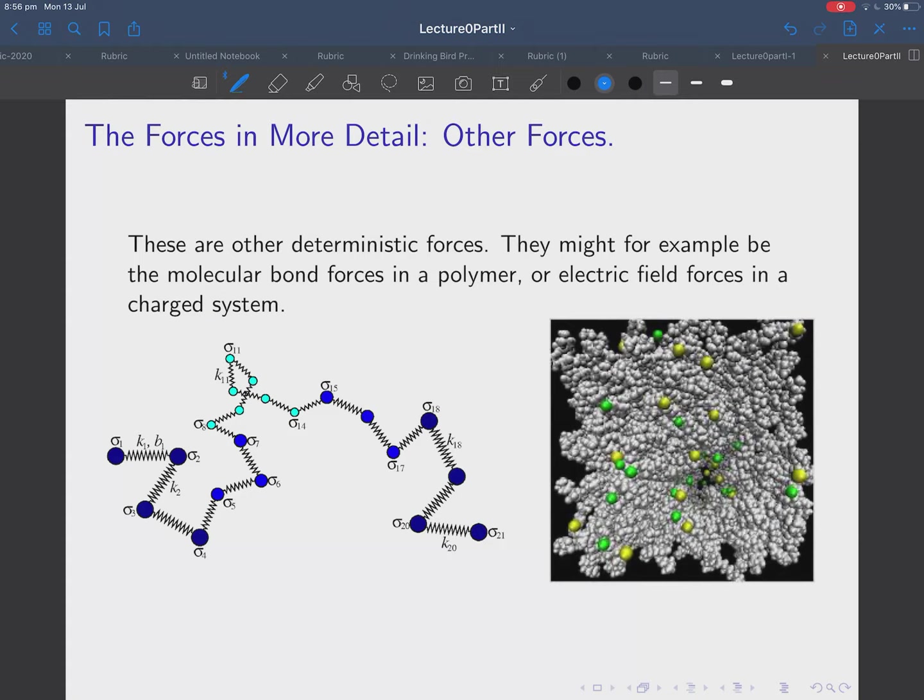Well, they might be molecular bond forces. So, in a polymer, you have these monomers here. This is a bead spring model of a polymer. And you have some forces, which here are, I mean, springs, but, of course, they're chemical bonds. You could have an electric field on the system if it's charged. There's a positive charge on that one. There's an electric field force like that if you put a field in that direction. So, you can have all these kind of gravitational forces.